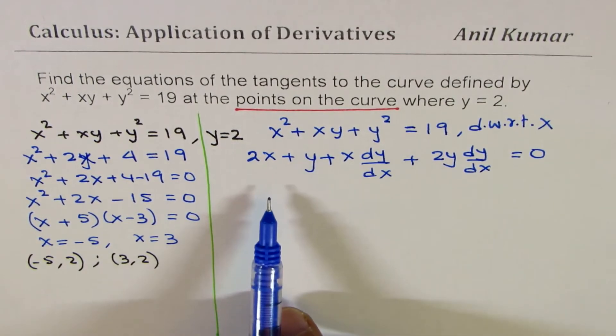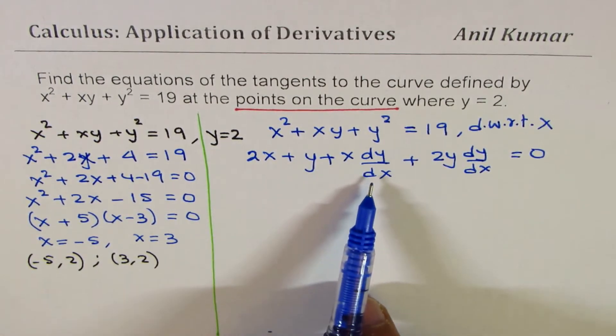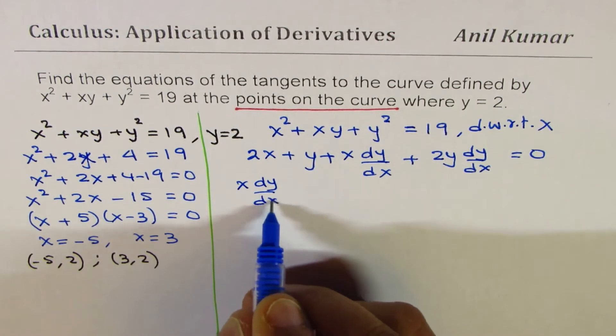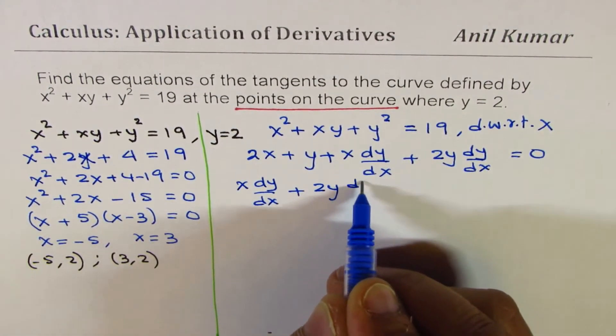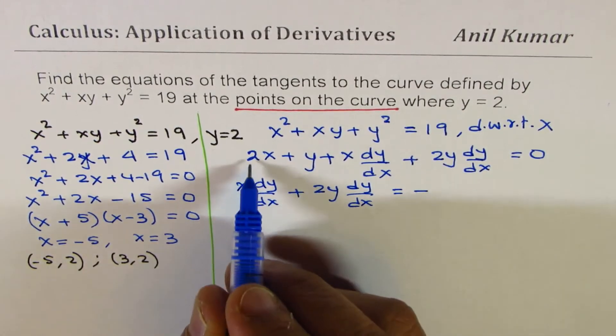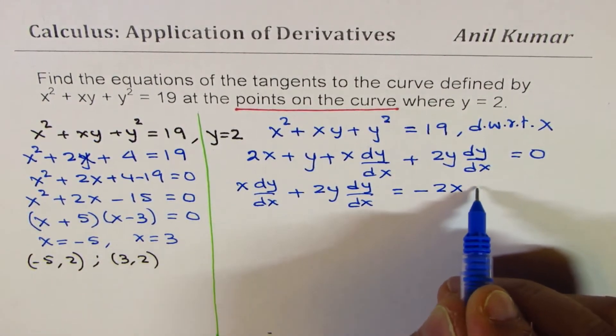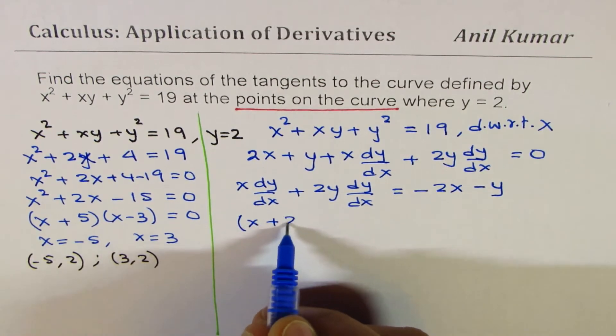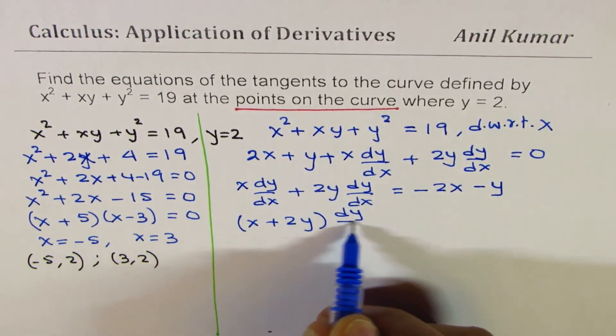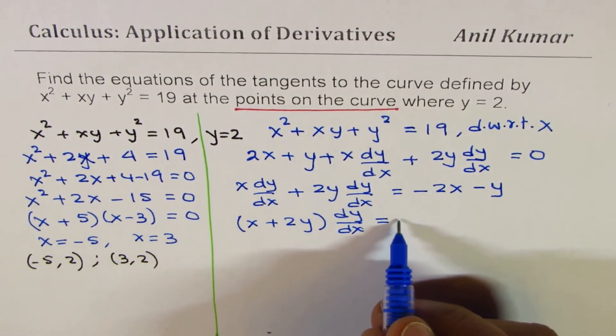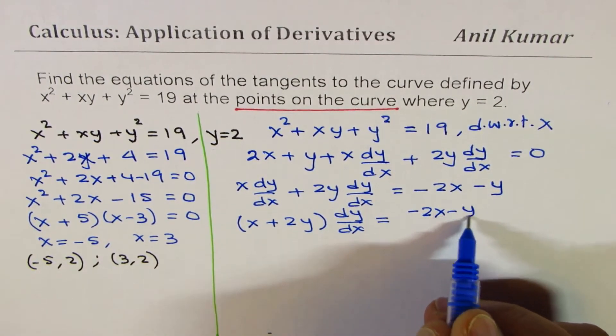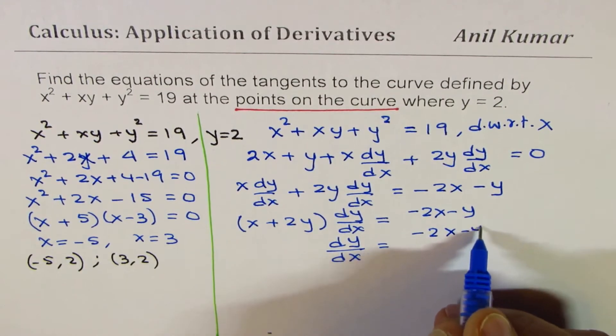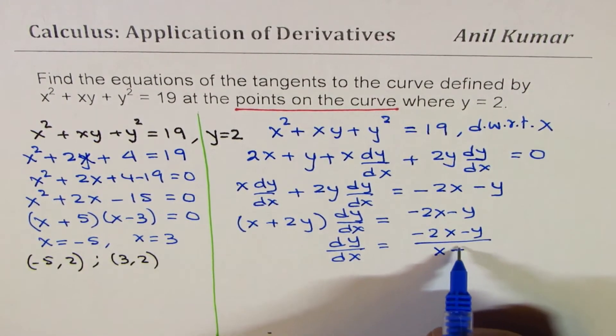So, that becomes the derivative. Now, we can isolate dy/dx. So, we get x·dy/dx + 2y·dy/dx = -2x - y. Taking dy/dx common, we get (x + 2y)·dy/dx = -2x - y or dy/dx = (-2x - y)/(x + 2y).